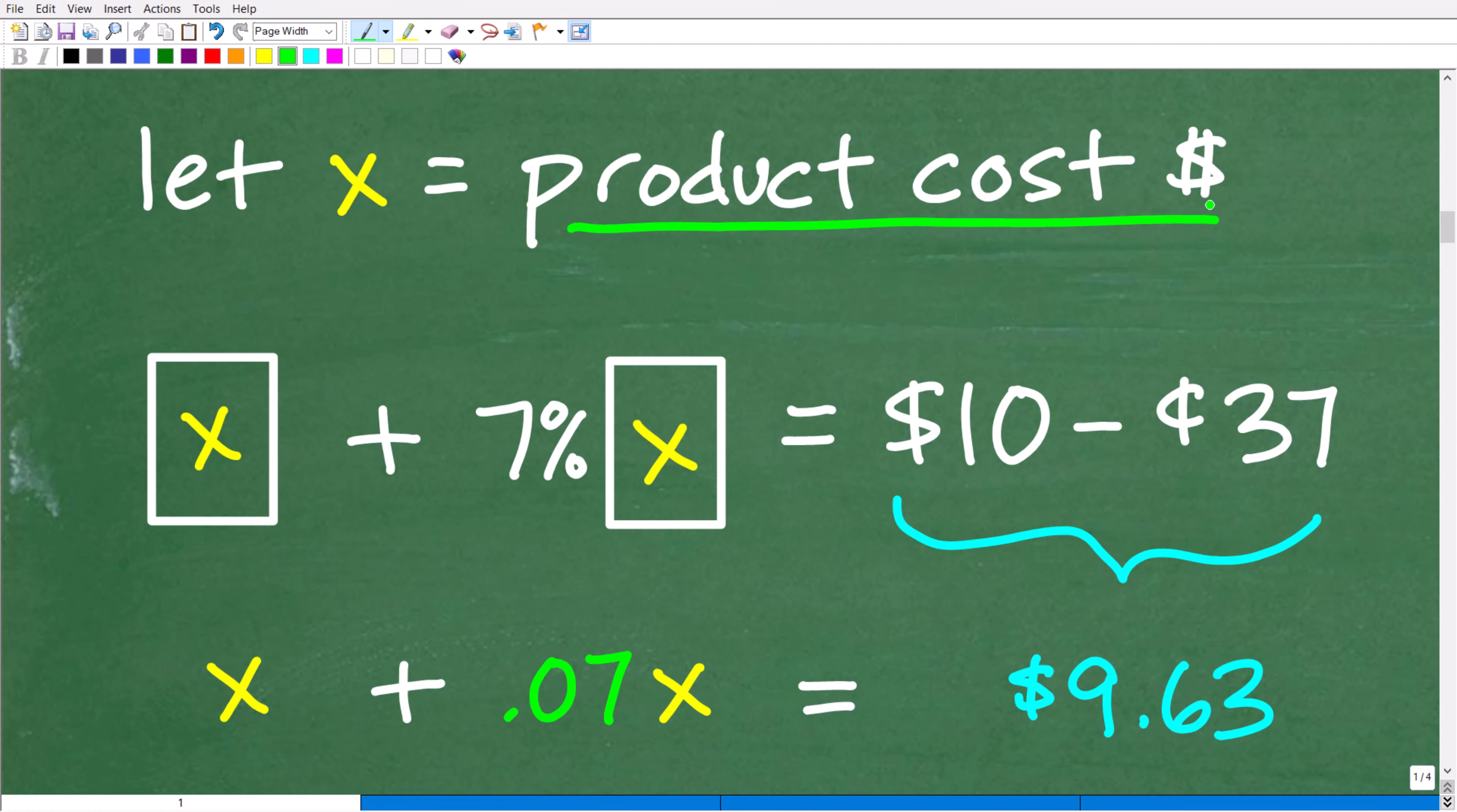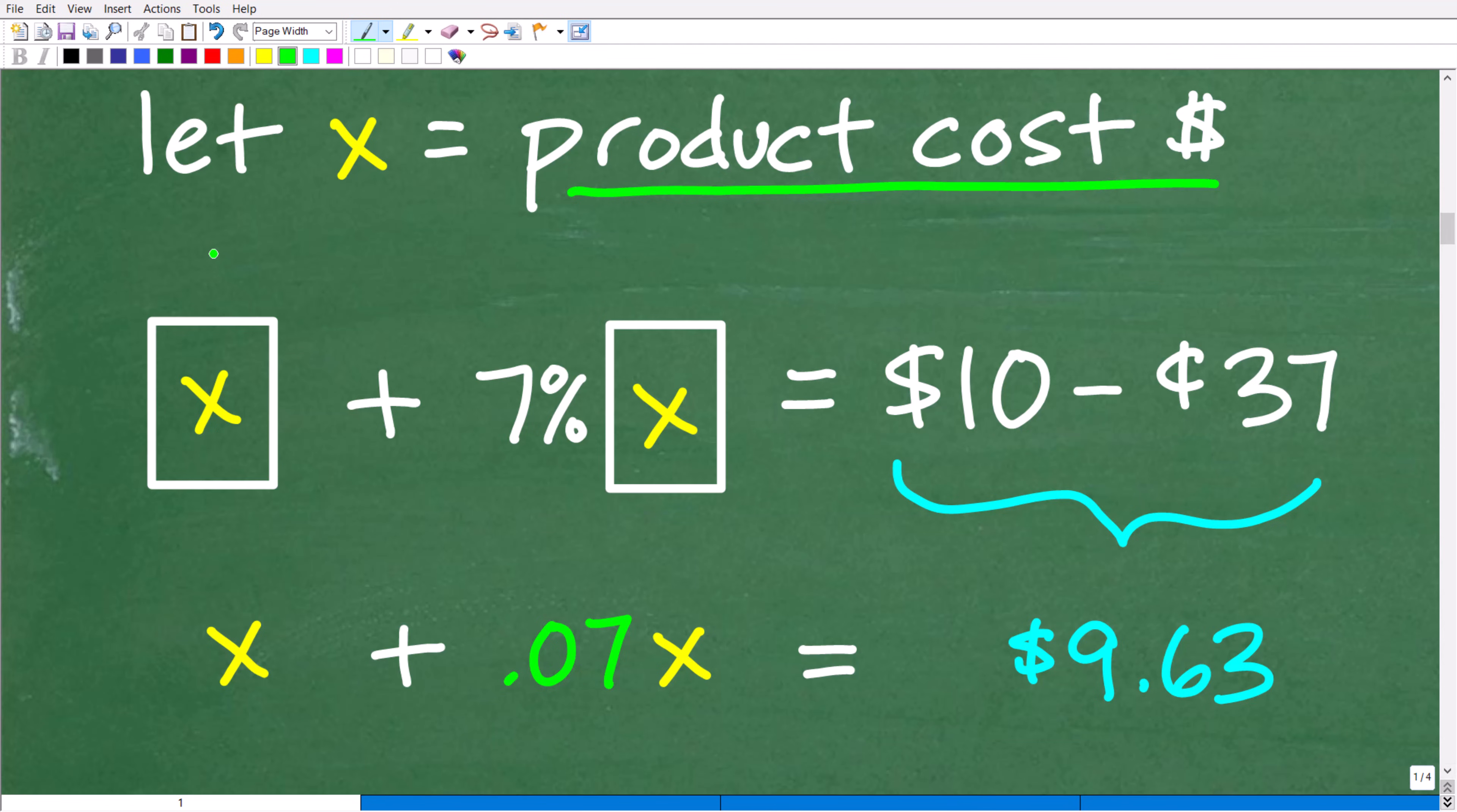Let's let X equal the cost of that product. So if that's the case, we can actually see what's going on here much easier. So here's the cost of the product. It's X. Now, we have to calculate tax for this transaction, which is going to be 7% of the cost of the product.